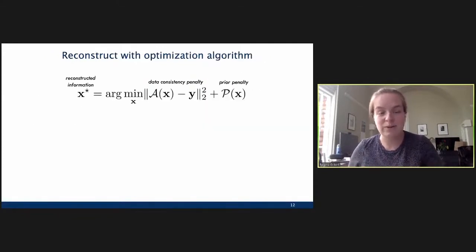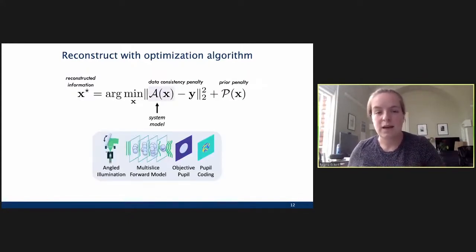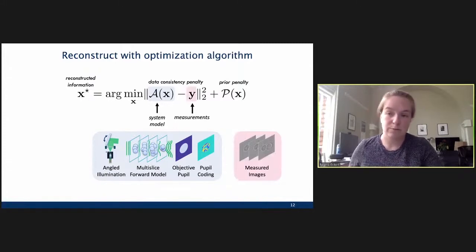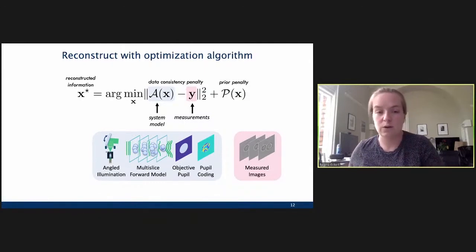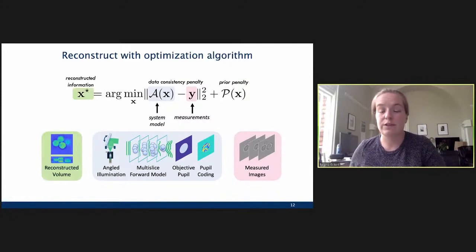However, when we introduce this pupil coding element, we can see that we get really a lot more contrast across these images. And so, we can just think about having just different information in these images, which is kind of apparent to us visually by having this higher contrast. All right. So, we reconstruct with that same optimization algorithm I showed before. I'll unpack some of these different terms here. So, we have our data consistency penalty, where we're having our system model that includes the information about our angled illumination, our multiple slice forward model, which is the scattering through the object, the objective pupil, and now this random pupil coding that we're applying. And that's going to compare to the actual measurements that we get out of our system. We can also apply a prior penalty that can say things like, I think that my system, my object's going to be purely real or smooth in some way, things like that, to make this work a lot better.